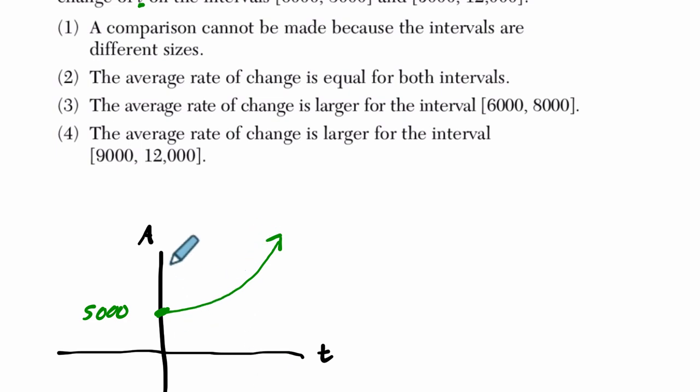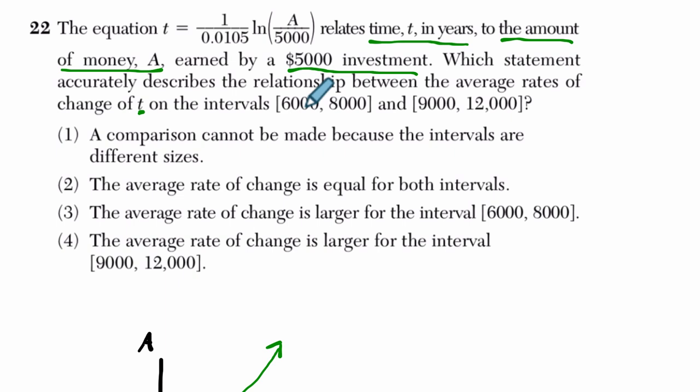The idea is that these intervals, it's not immediately obvious what's happening here, but if they say the average rate of change of t, so the average rate of change of whatever you're looking at, that's usually your dependent variable, that's going to go on the y-axis. And you can tell that the intervals, these numbers, 6,000, 8,000, 9,000, 12,000, those are money amounts, not year amounts. When I first saw this problem, I just rewrote this equation so A was isolated, and I plugged in these numbers for t, but that would be ridiculous. 6,000 years, 8,000 years, clearly that needs to represent the money that we're dealing with.